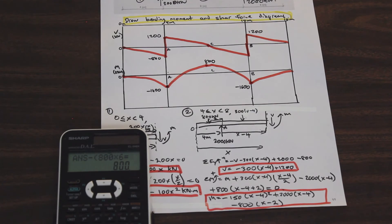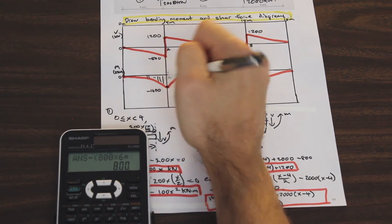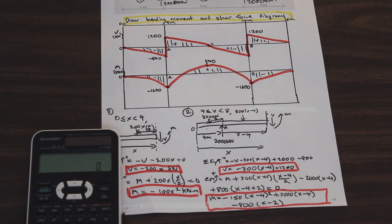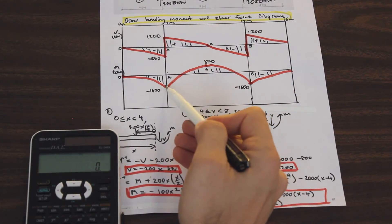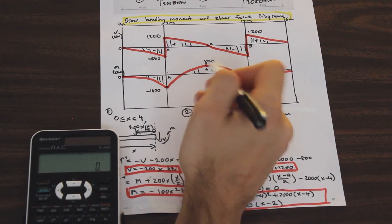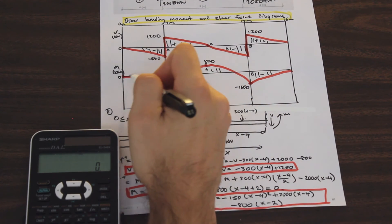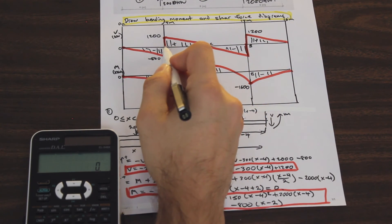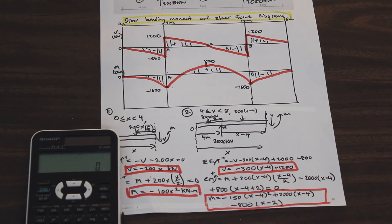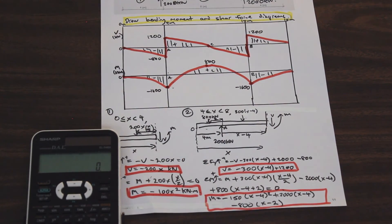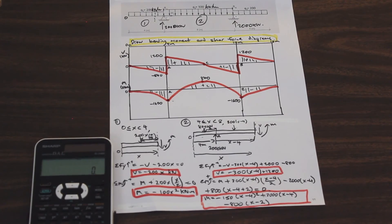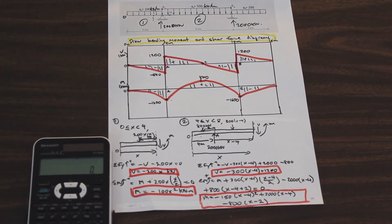We're done. We've drawn our shear and bending moment diagrams. One important thing to keep in mind: as you can see, when shear is equal to zero, those are going to be your maximum moments. Also, your moments and your shear need to go back to zero at the ends — if they don't, you've done something wrong. Thanks for watching. I know that was a long video, but hopefully it gives you a couple of tricks with symmetrical beams and shows you how to draw both diagrams.